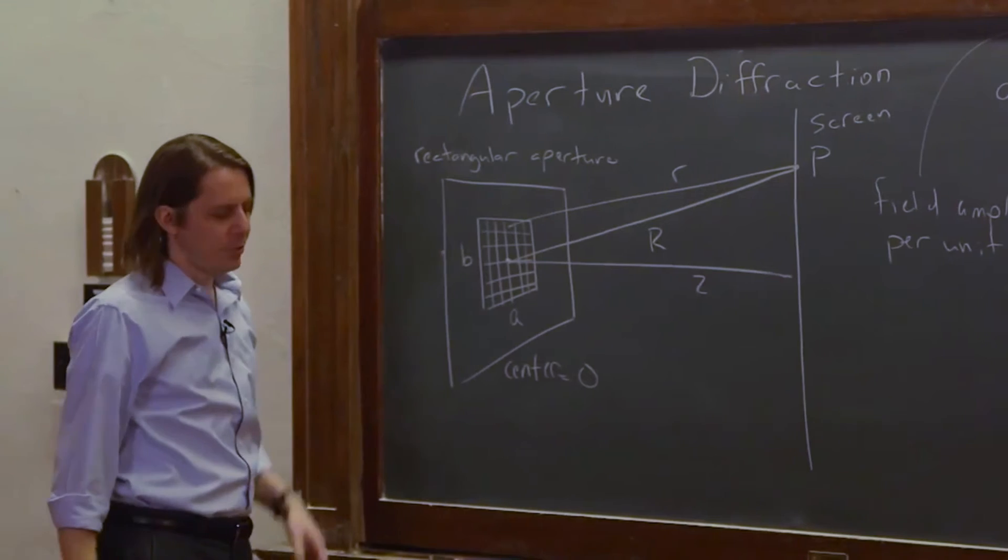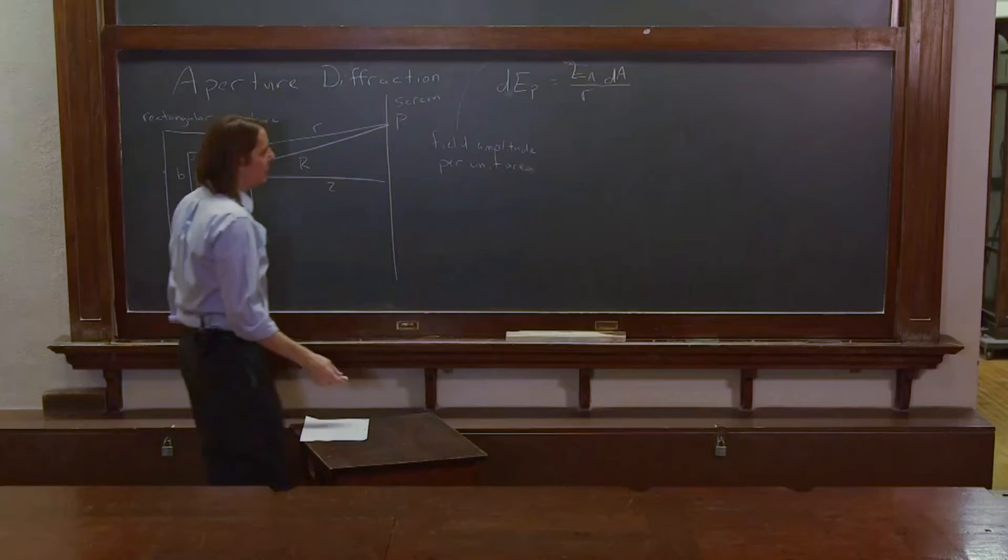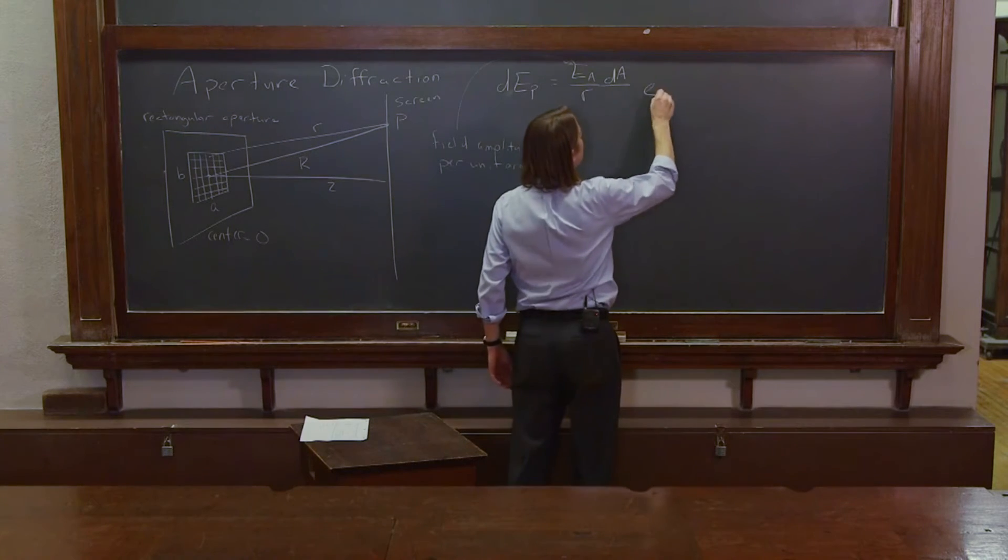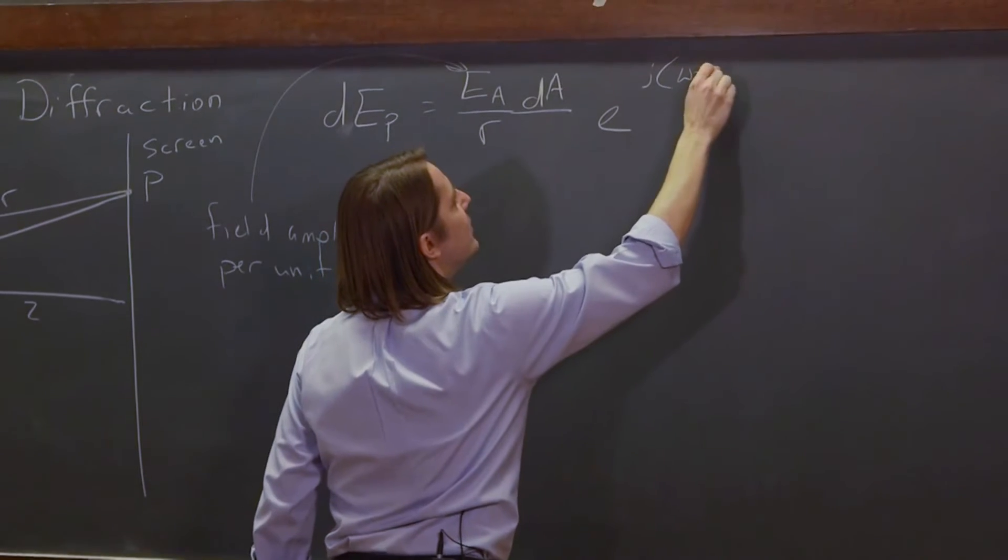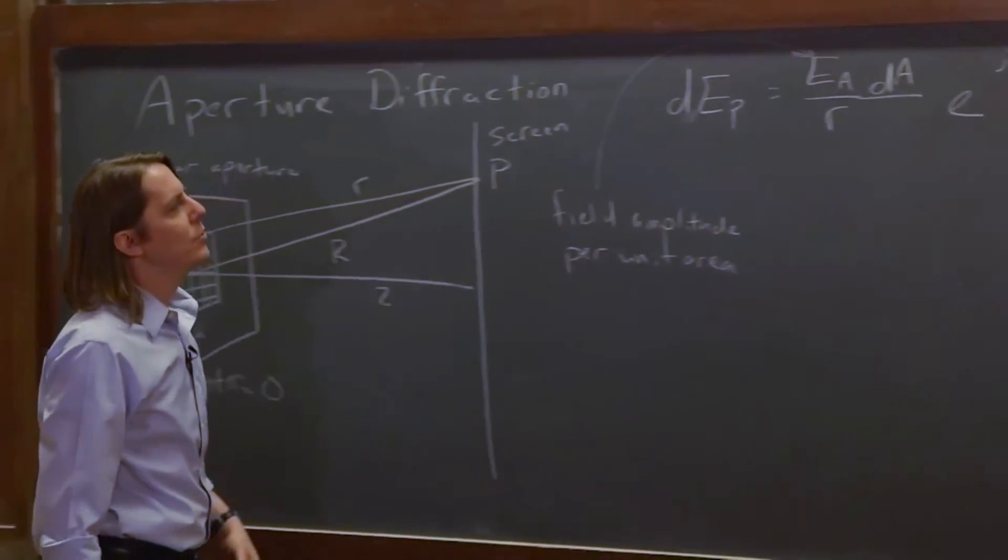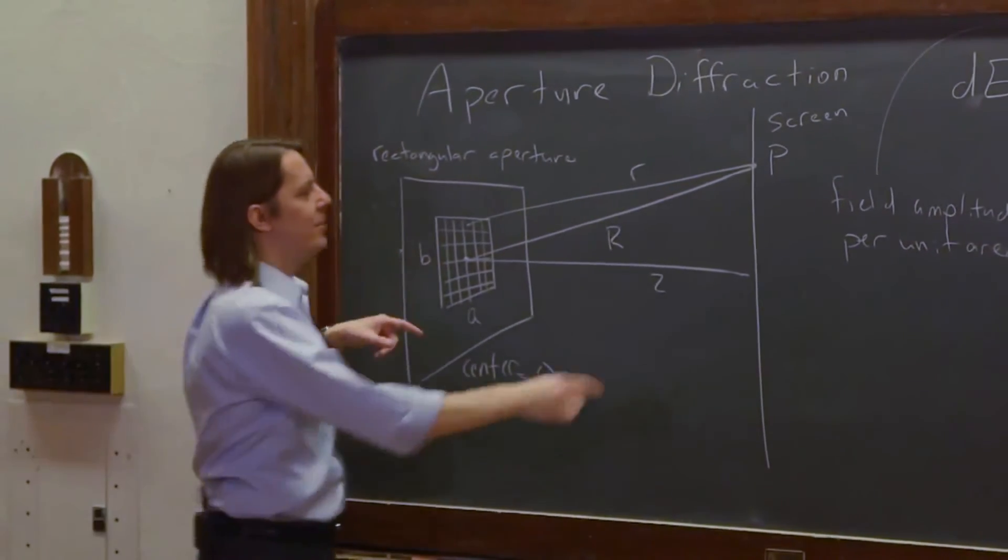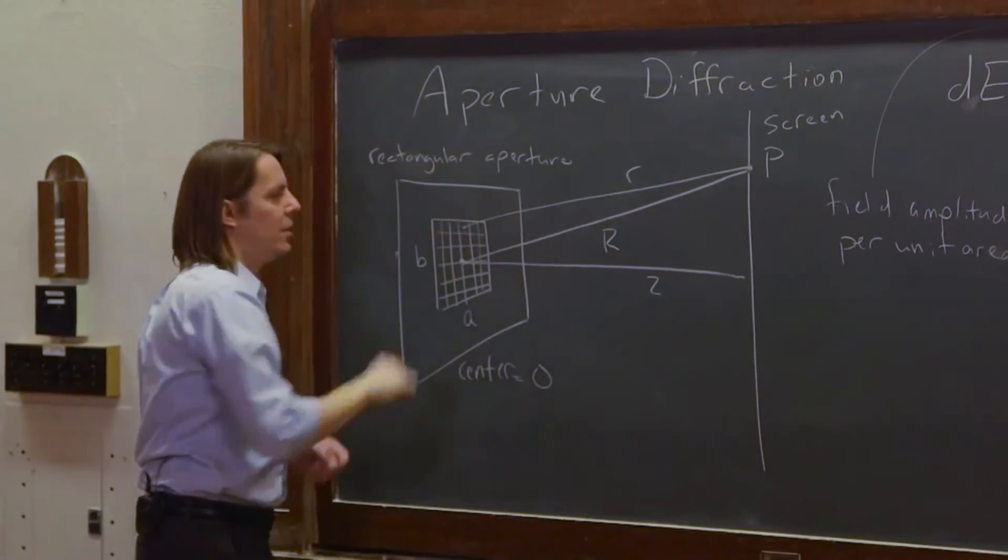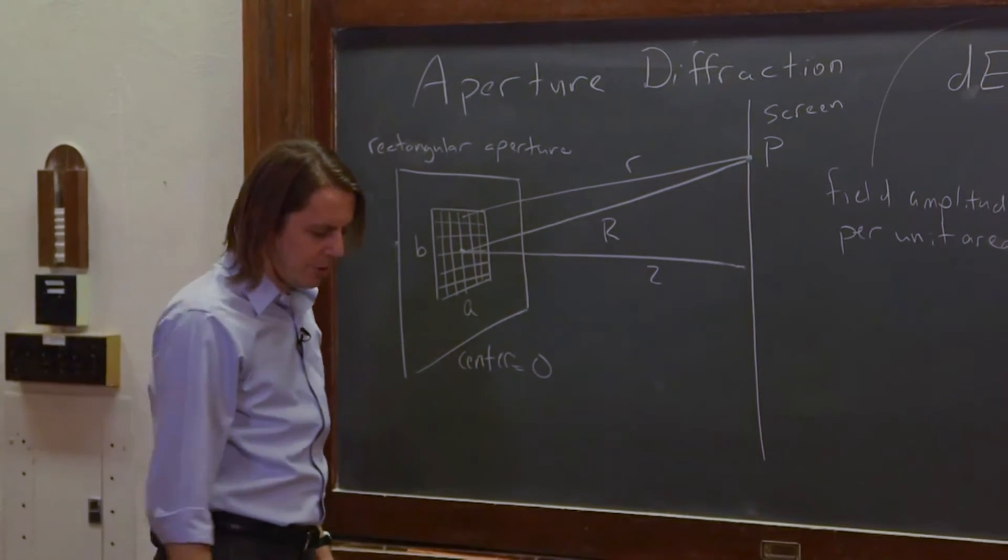So we know that's what the amplitude of a spherical wave does. And then we need the oscillating part, e to the j, and I'm going to use a convention, omega t minus kr. So we use a little r in both cases, because we're thinking about the field at P due to the Huygens wavelet that is a little r away.